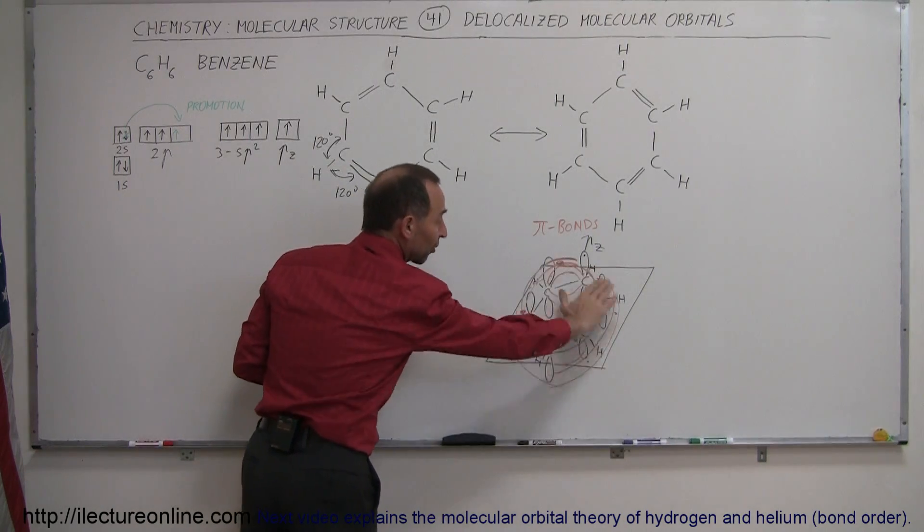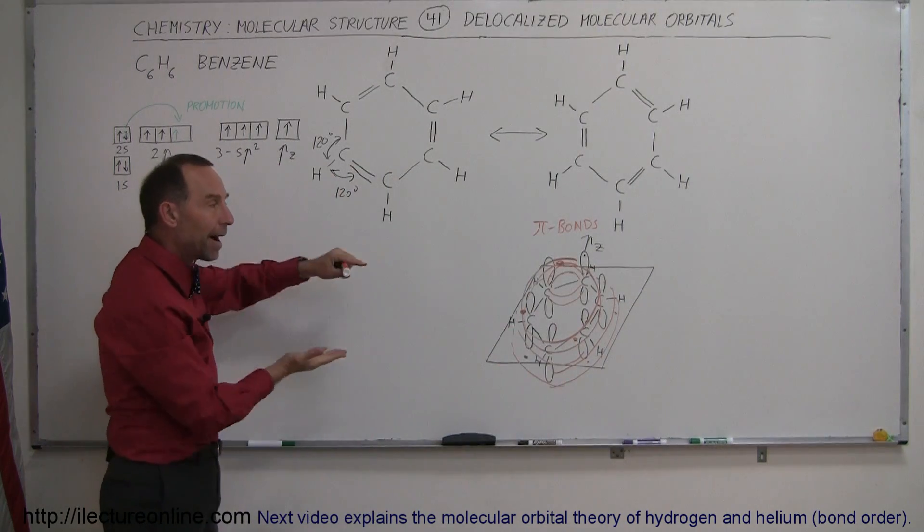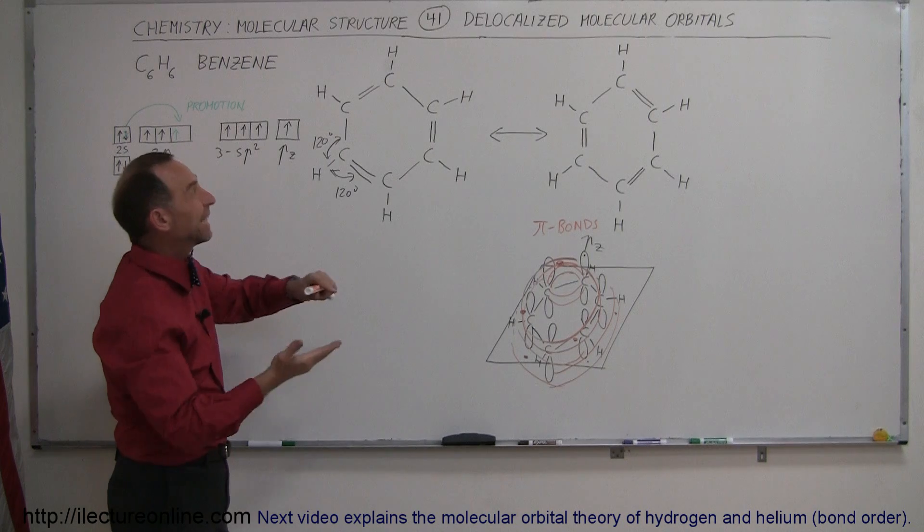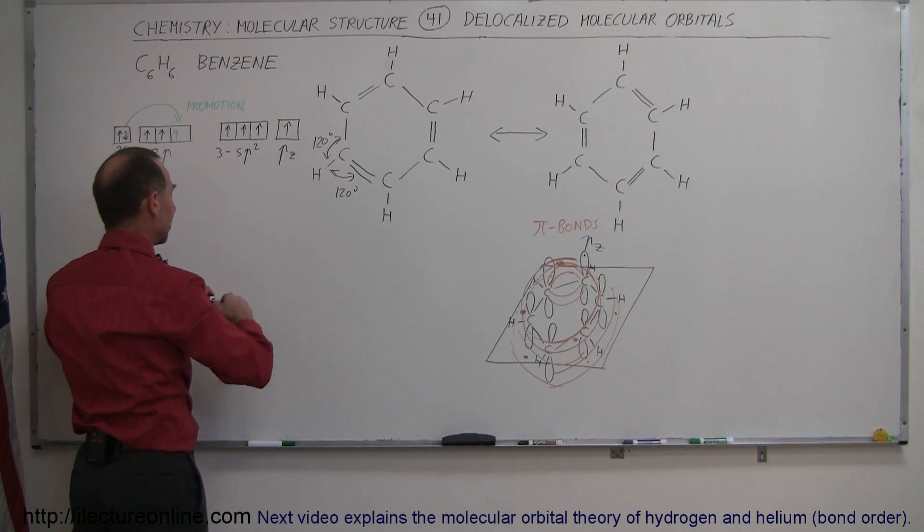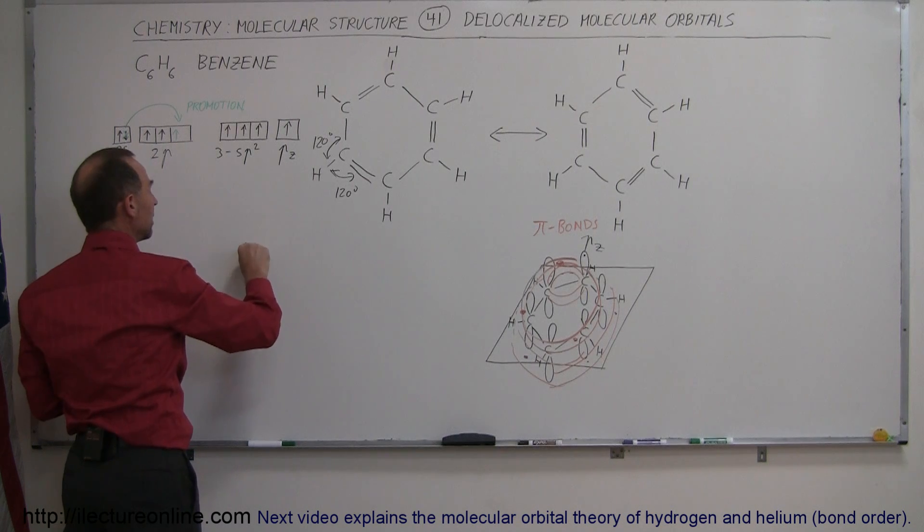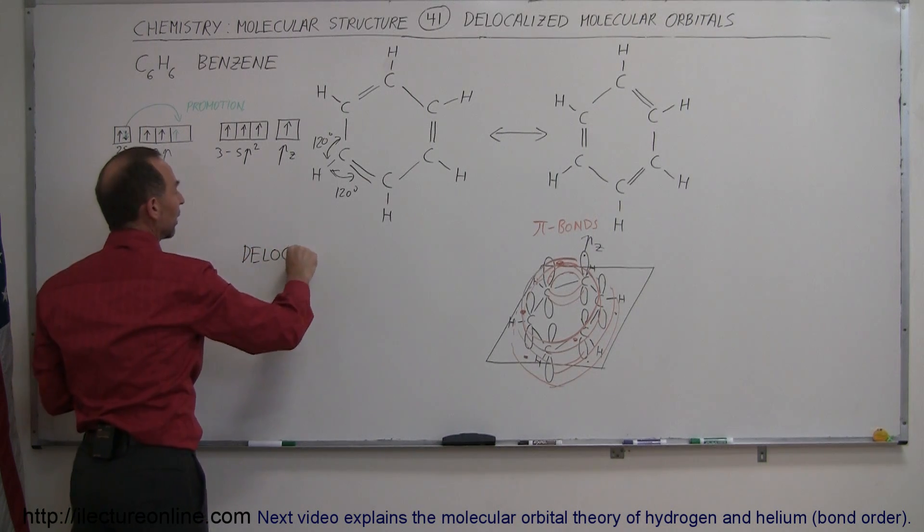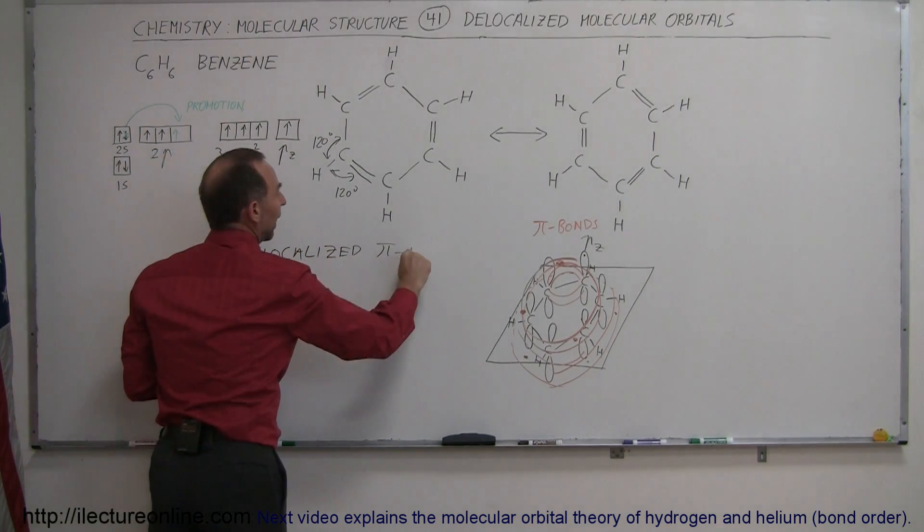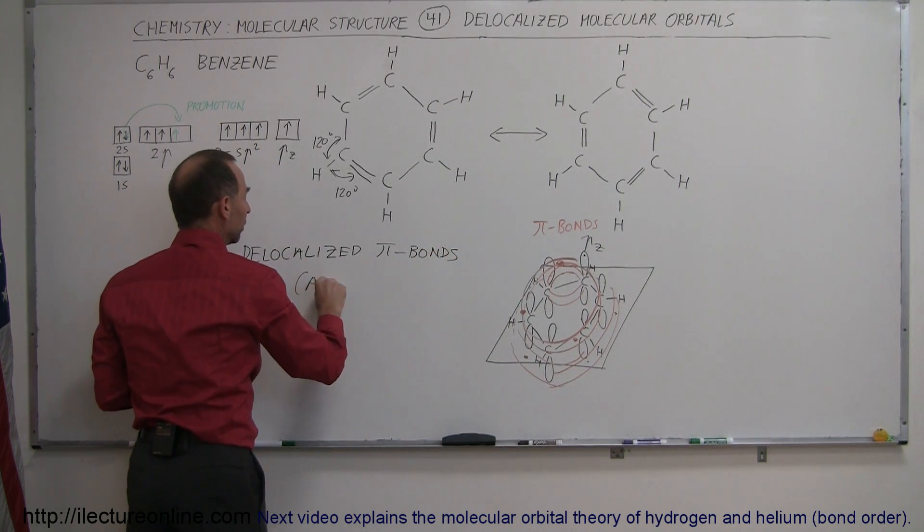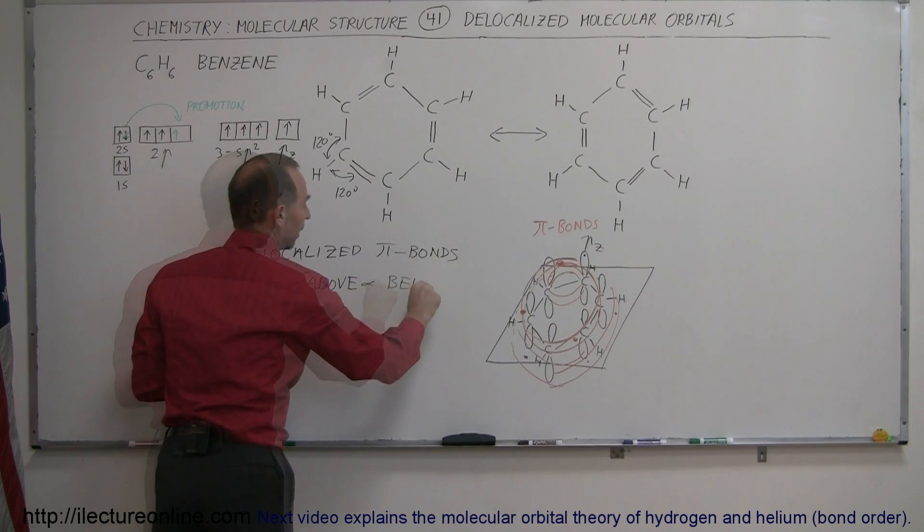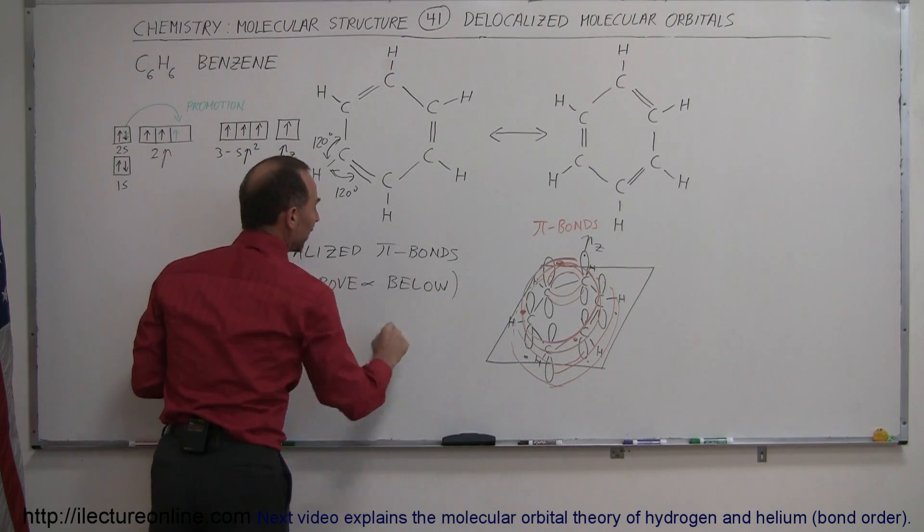So the six electrons from the six carbons will then occupy that, what we call, delocalized pi bond. And so that's what we call them. We call these delocalized pi bonds, and that would be above and below the benzene rings.